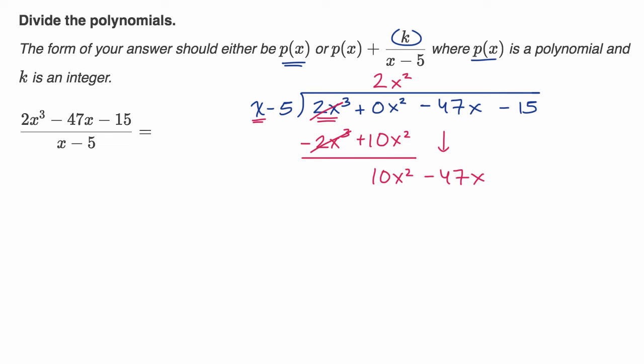And once again, we look at the highest degree terms. X goes into 10x squared 10x times. So plus 10x, 10x times negative five is negative 50x. Negative 50x. 10x times x is 10x squared.